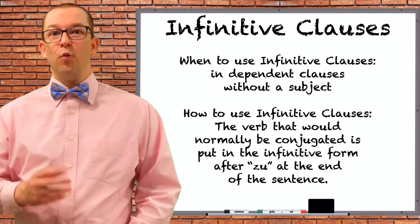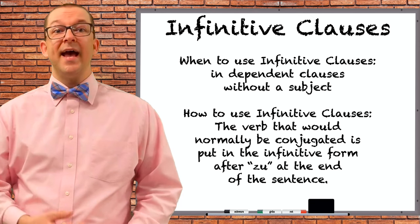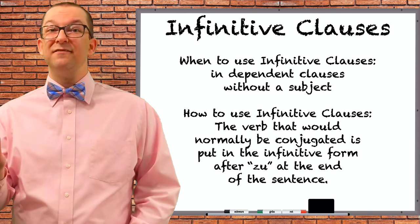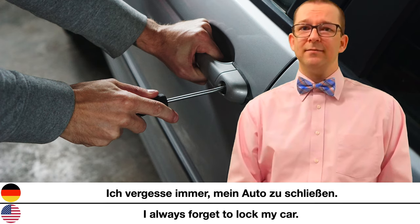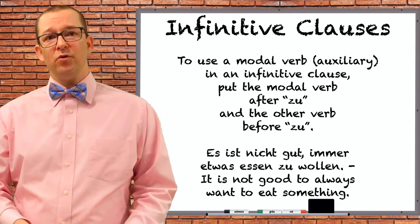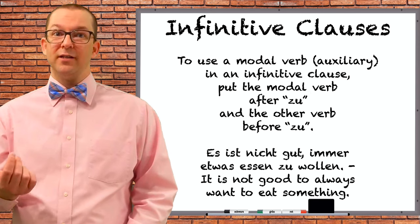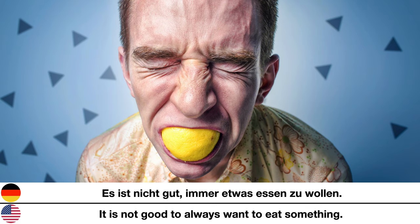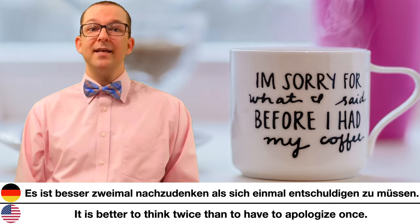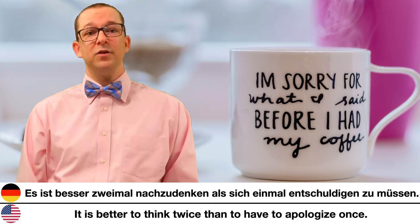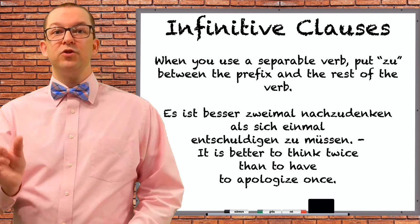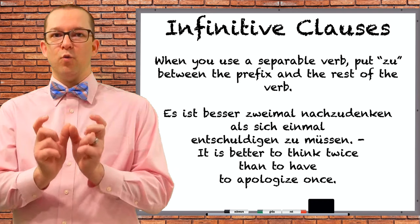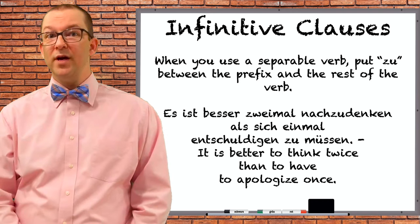Now that we have the general rules, let's get to the how. You use the verb you would normally conjugate in the infinitive form right after 'zu'. This works when you only have one verb in the clause: Ich vergesse immer mein Auto zu schließen — I always forget to lock my car. When you use a modal verb, you put the modal verb directly after 'zu' and the other verb directly before it, both in infinitive form: Es ist nicht gut, immer etwas essen zu wollen — It is not good to always want to eat something. Es ist besser zweimal nachzudenken, als sich einmal entschuldigen zu müssen — It is better to think twice than to have to apologize once. If you have a separable prefix, you put 'zu' between the prefix and the rest of the verb, all as one word.